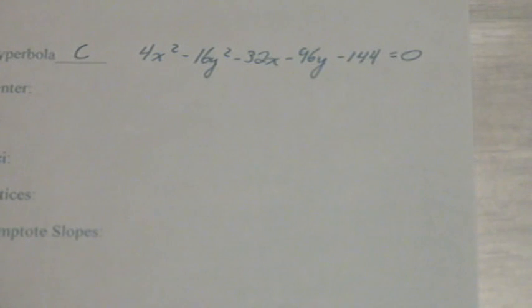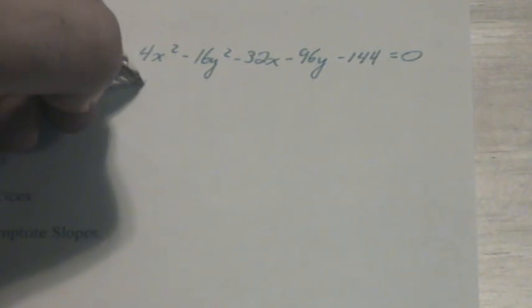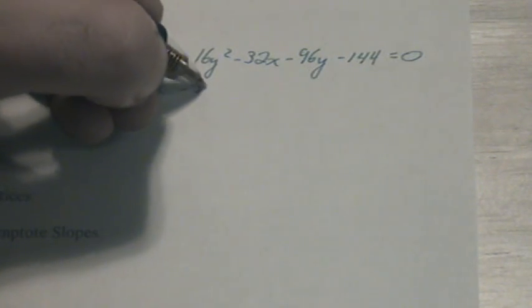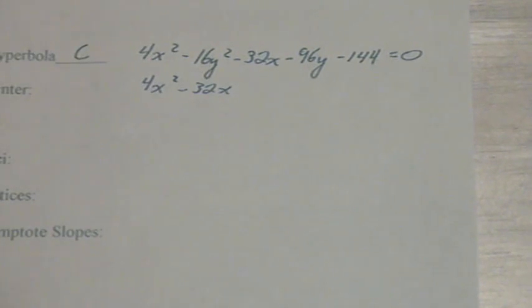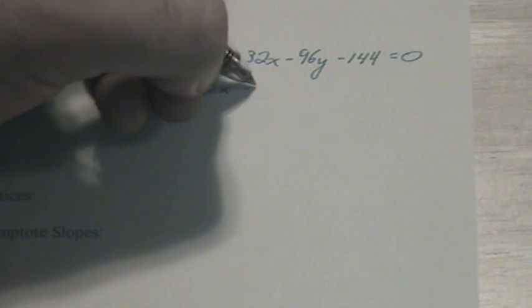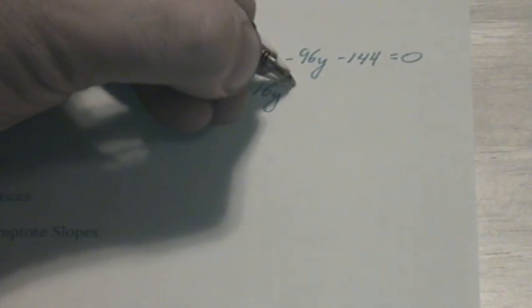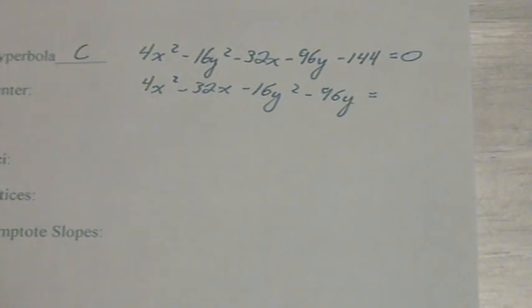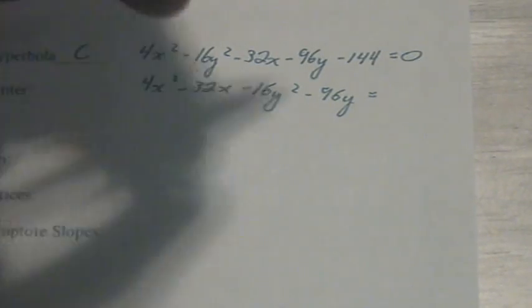The first step we're going to take will be to group the x's together and the y's together, giving us 4x squared minus 32x minus 16y squared minus 96y equals, and we're going to add the 144 to both sides, so it equals 144.